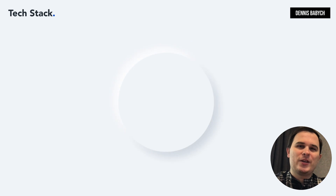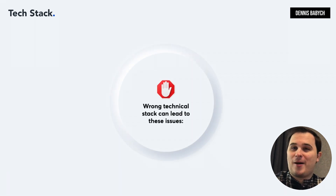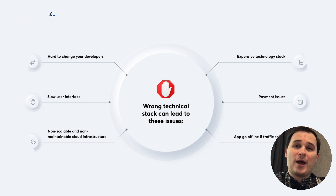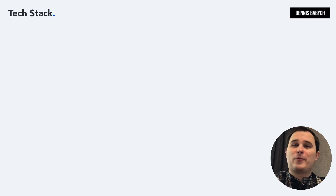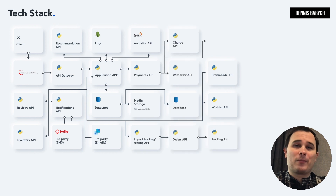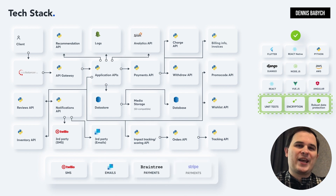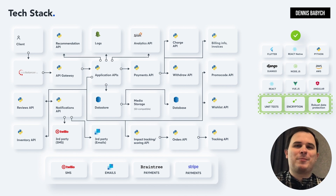Let's delve into the tech stack — this is one of the most critical aspects when creating a healthcare app. Choosing the right tech stack is vital to avoid challenges such as slow user interfaces, non-scalable and non-maintainable cloud infrastructure, high costs, payment and subscription issues, and the risk of your app going offline during traffic spikes. If you're planning to create an appointment CRM with AI, it's essential to select the appropriate tech stack that enables rapid development of your minimum viable product. Flutter or React Native are excellent choices for Swift mobile development. For backend development, Python, Django, Node.js, and Amazon Web Services are perfect options. React, Vue.js, and Angular are ideal for crafting web applications. To develop the AI image recognition tool, Python, Langchain, PyTorch, and Keras should be utilized.